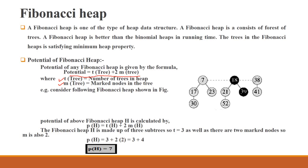Consider the following Fibonacci heap shown in figure. We will find its potential. First find t of H, which means number of trees: number one, number two, and number three. It means number of trees in heap is 3.